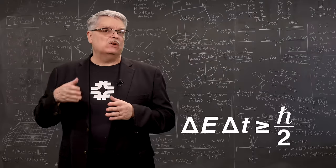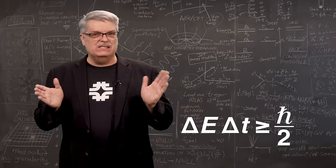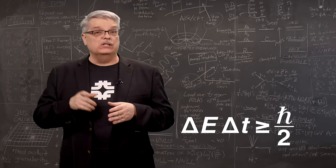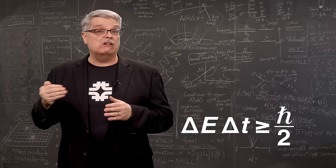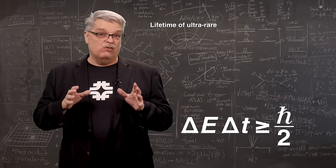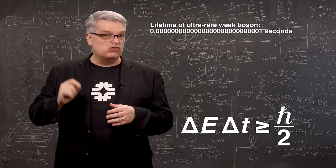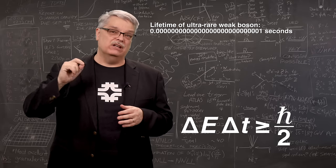And you can use the Heisenberg uncertainty principle to get some insights into what's going on. In order for a weak boson to exist with a mass so far away from the normal mass, it can only exist for, in round numbers, one ten-thousandth of a trillionth of a trillionth of a second.